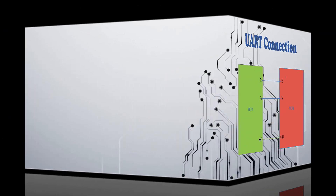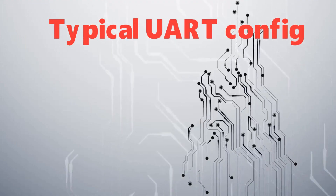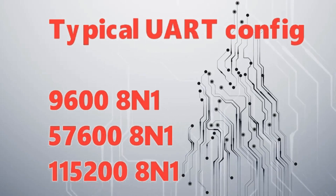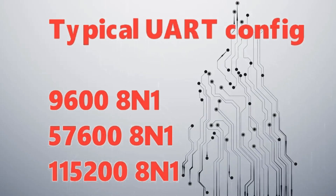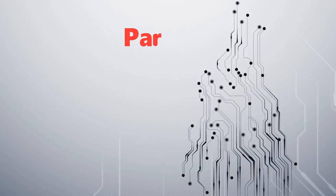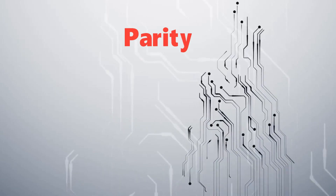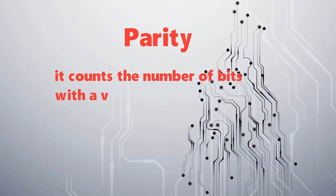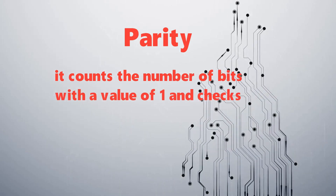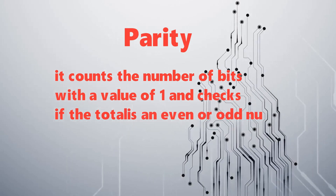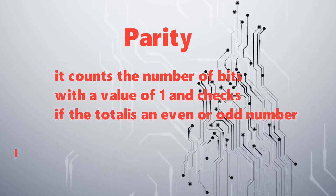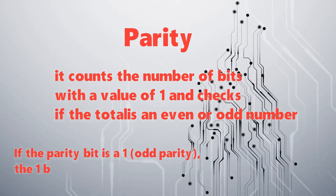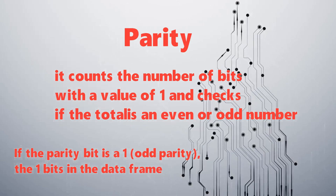Typical UART configurations are 9600-8N1, 56000-8N1, and 115200-8N1. The parity bit counts the number of bits with the value 1 and checks if the total is an even or odd number. If the parity is set to odd parity, the number of 1 bits in the data frame should total to an odd number.